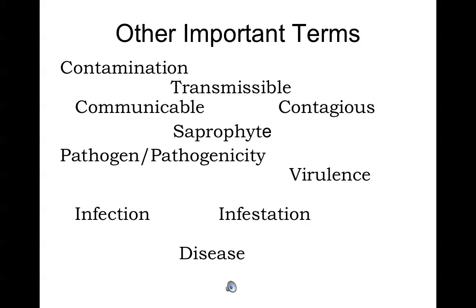Communicable simply means the transfer of microorganisms from person to person. Contagious implies easy transfer — when we say something is contagious, we're implying it's easily transferred from person to person, sometimes very easily, using the phrase 'highly contagious.' A saprophyte is one of nature's decomposers — many fungi and bacteria that break down organic material from a dead animal or plant.